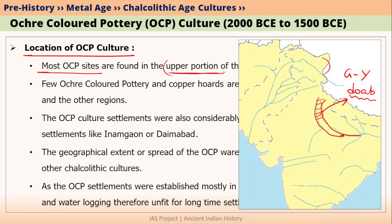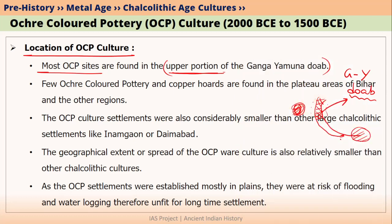The Ochre Coloured Pottery was mainly available in the upper portion of Ganga Yamuna Doab — that is, from the area hatched on the map and nearby regions. We have also found Ochre Coloured Pottery from Ganeshwar Jodhpura culture and from other regions like the Bihar Plateau.